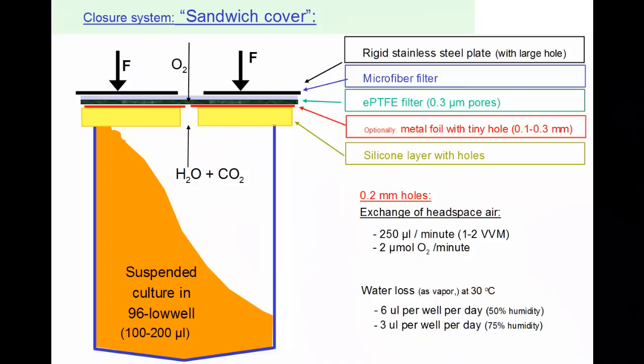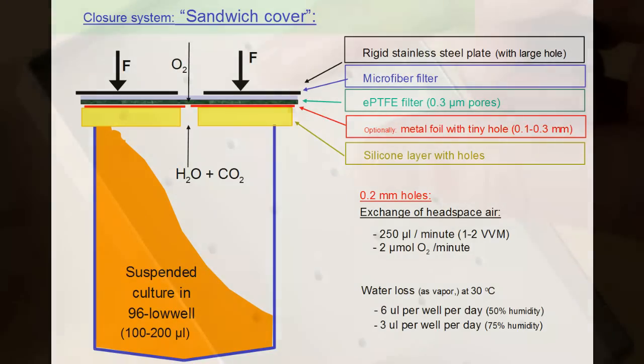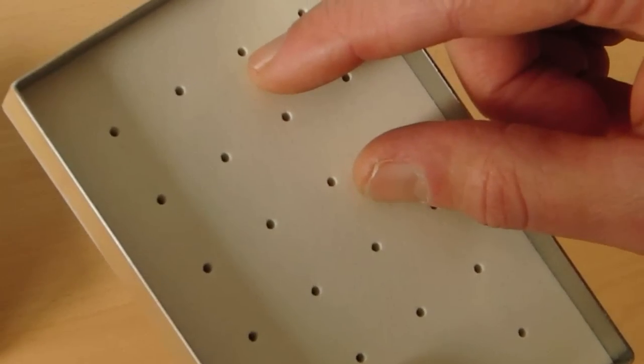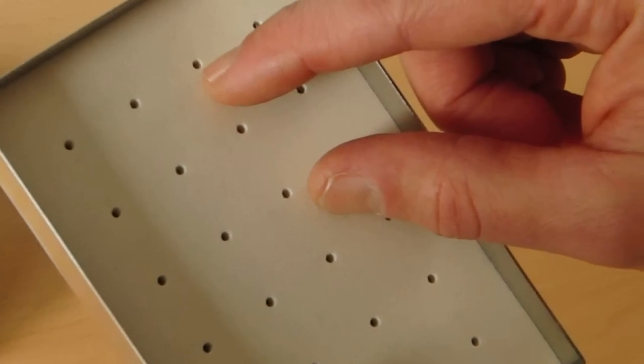In these standard sandwich covers, the size of the hole is chosen to result in an exchange of headspace air rate of 1-2 culture volumes per minute, which contains sufficient oxygen for even the fastest growing bacteria.